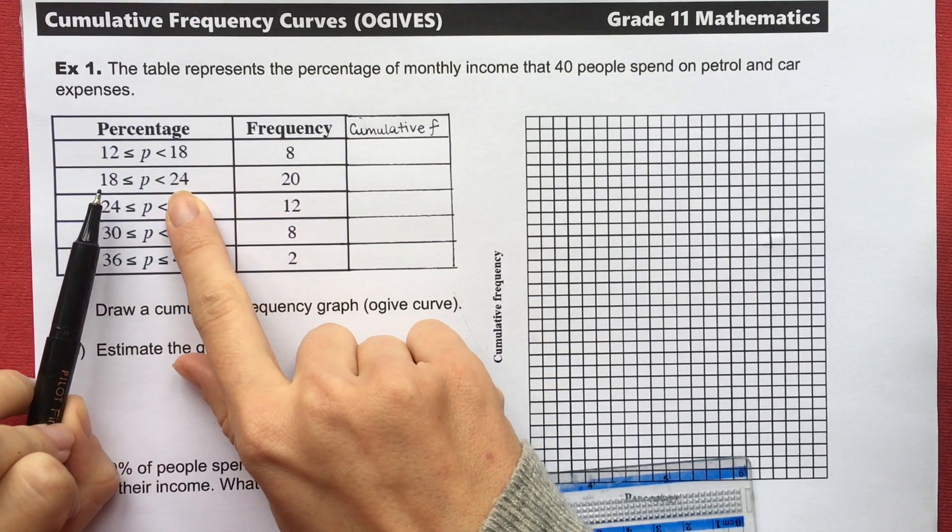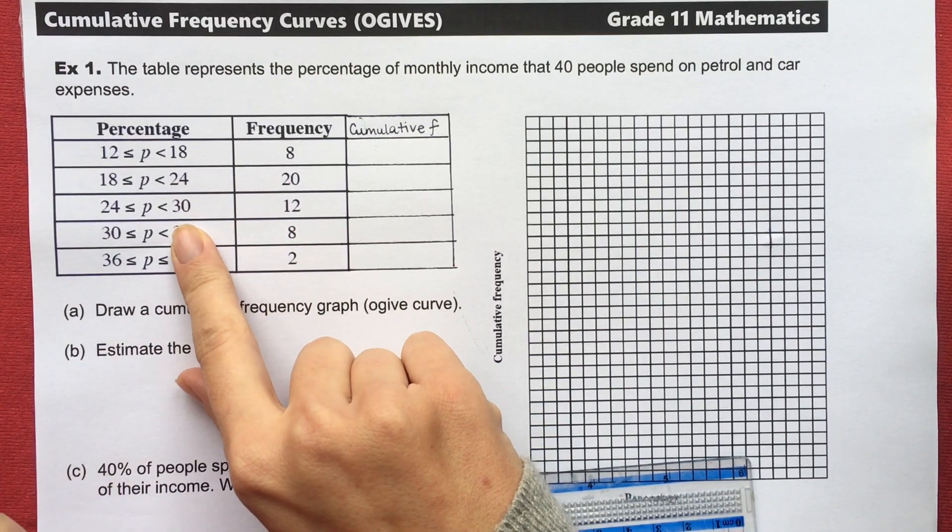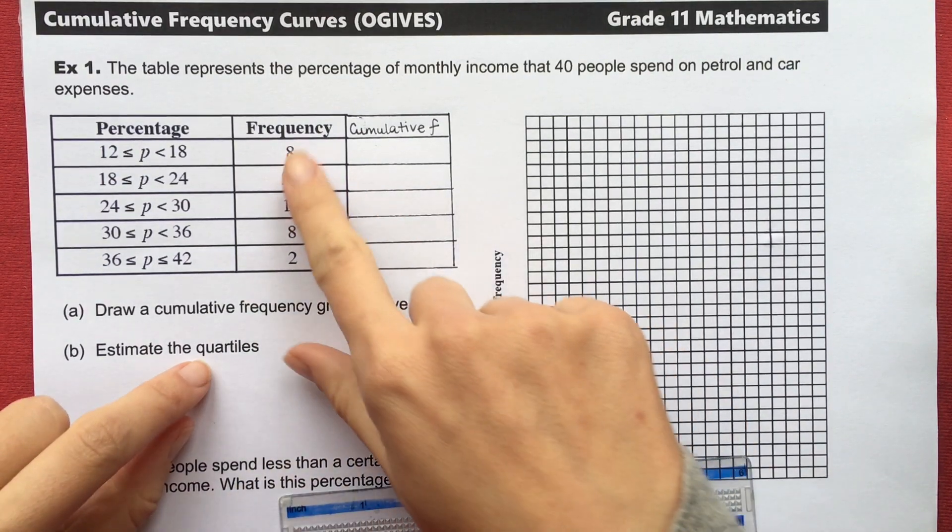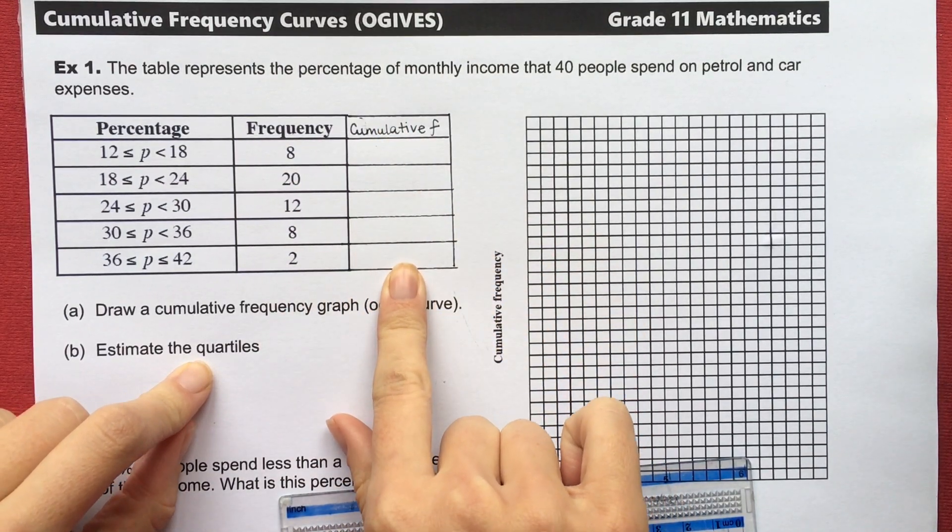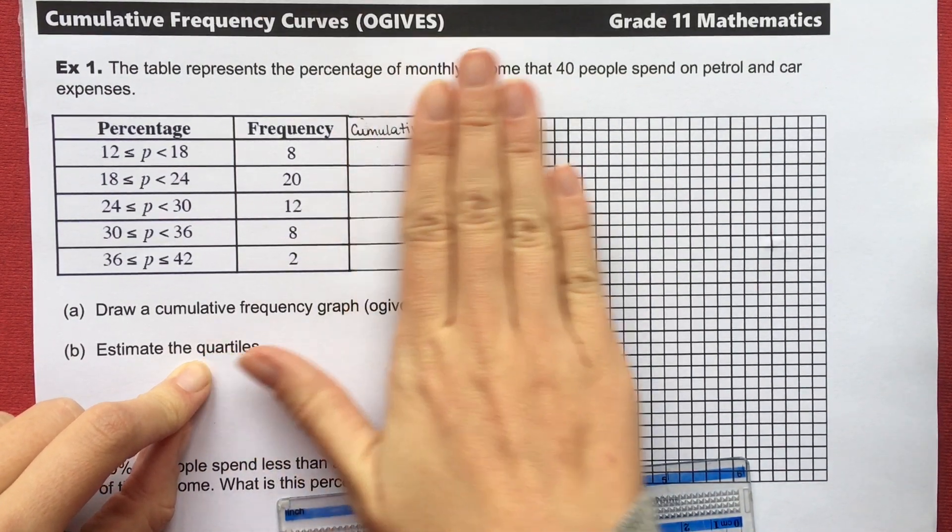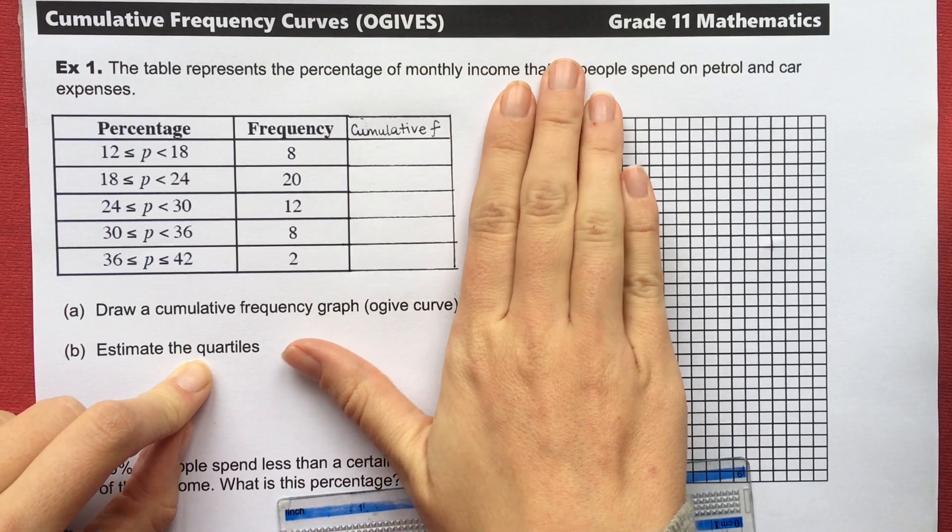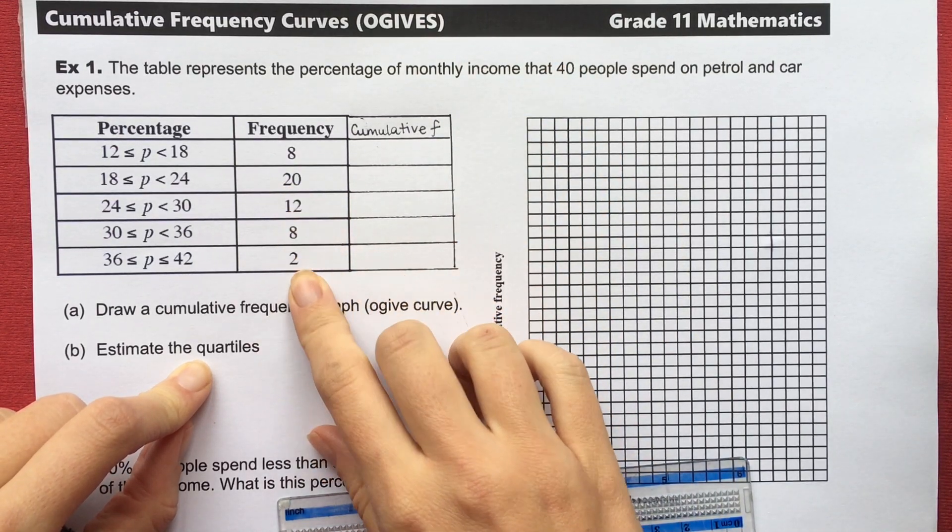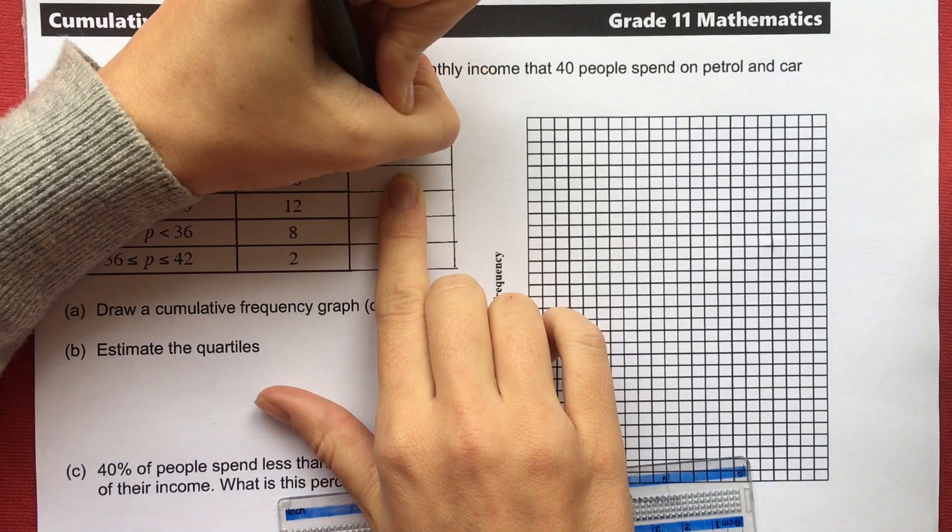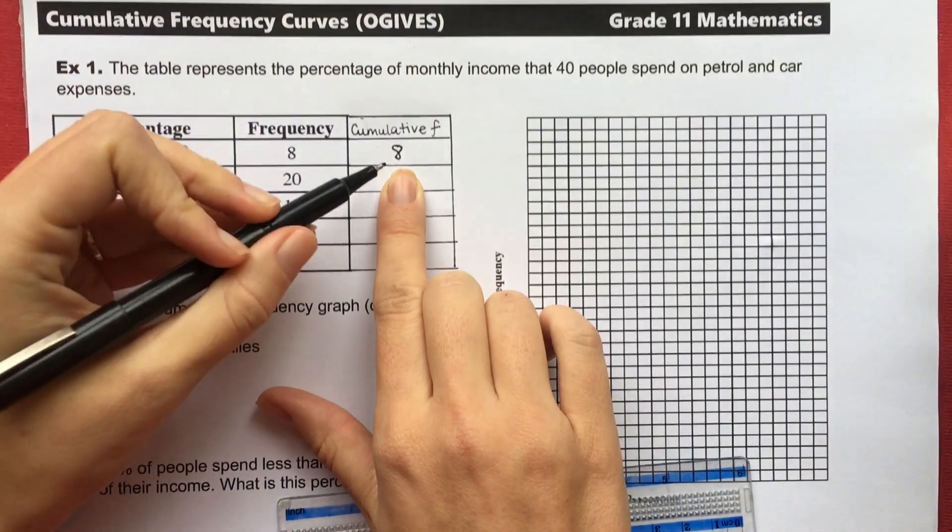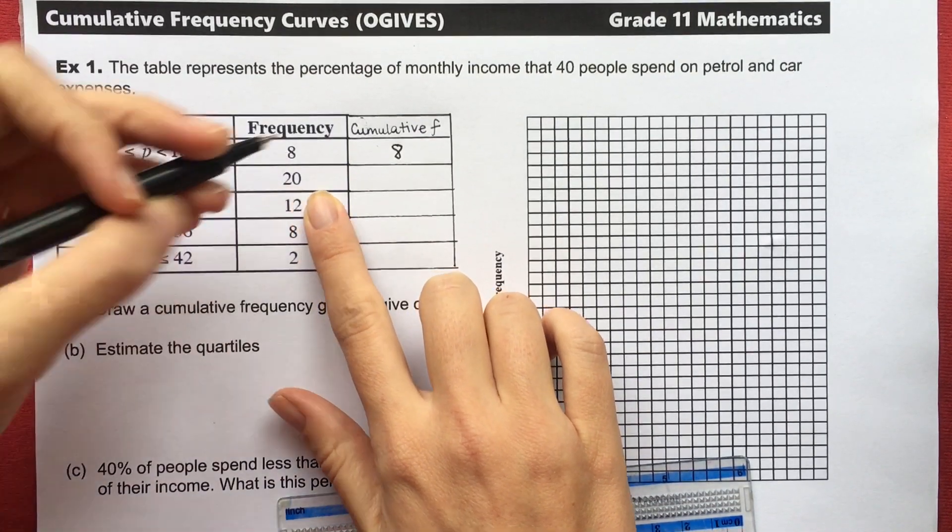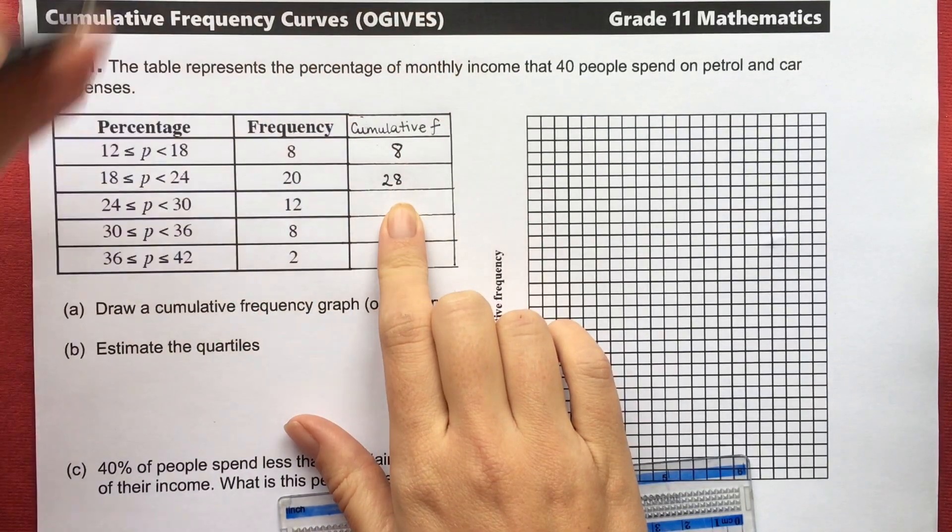20 spend between 18 and 24% and so on. If we want to draw a cumulative frequency curve or an ogive, instead of frequency I need to add a column to my table which I've already done called cumulative frequency. But normally the question would just be given to you like this and you'd have to add this table. We're going to sum all of the consecutive frequencies or accumulate them. In this first interval we've only gone through 8 values so my cumulative frequency is 8.